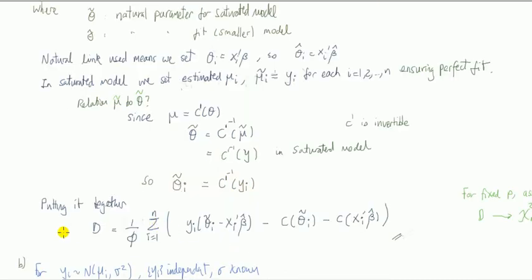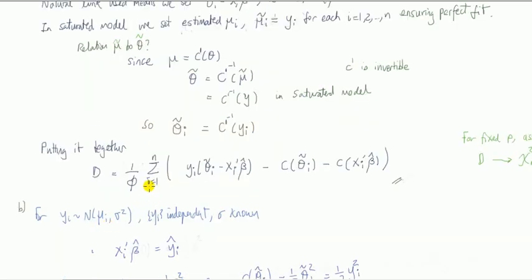In other words, we can relate theta to the actual observed values for the y for each observation like so. So putting all together, substituting all these things into the deviance, we have this expression and we're done.